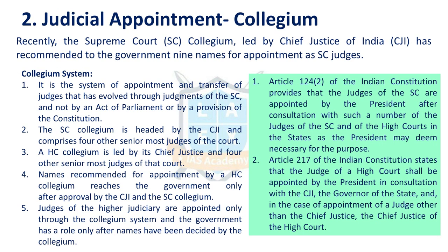Next issue is judicial appointments and the collegium system. Recently, the Supreme Court's collegium, headed by the CJI, has recommended names of Supreme Court judges, and the President of India has cleared nine names. This is the first time such a large number of judges are appointed at one time. Under Article 124, Supreme Court judges are appointed by the President of India. Under Article 217, the Constitution allows the President of India to appoint High Court judges.